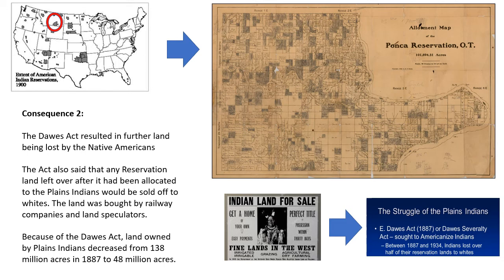So put Consequence Two with a heading: the Dawes Act resulted in further land being lost by the Native Americans. Write your notes explaining why and how that was. That ends our study of the Dawes Act and reservations. We've understood a little bit about the US government's attempts in the 1880s to solve the problem of the Plains Indians. Well done.